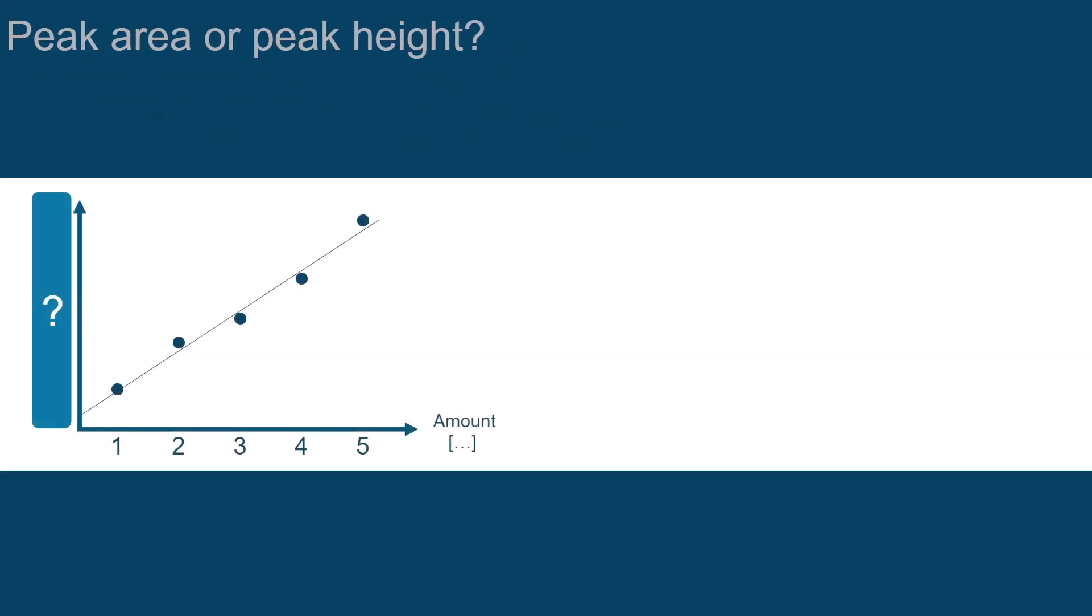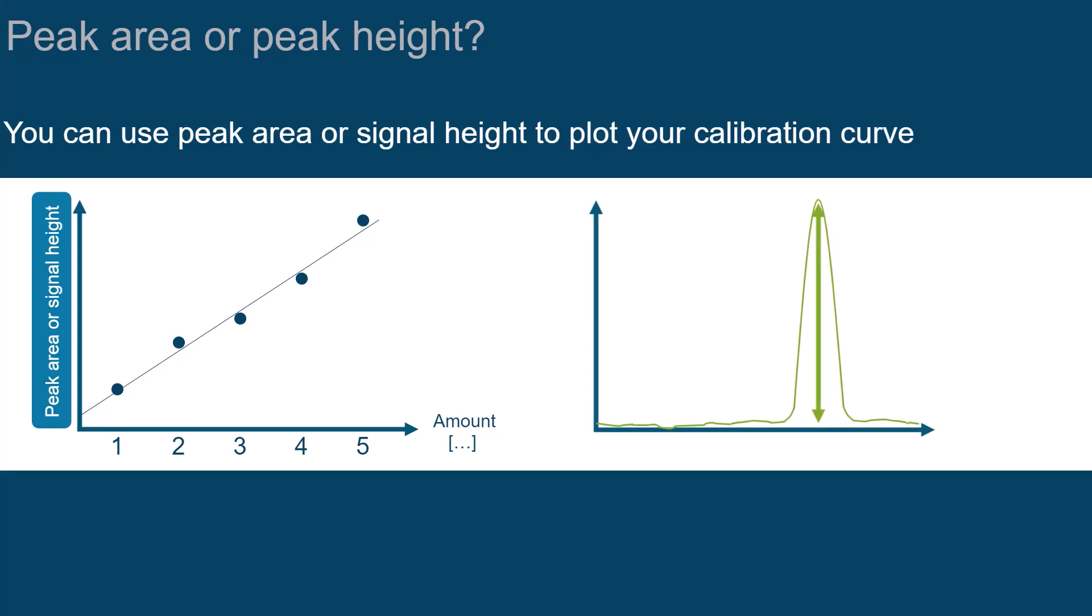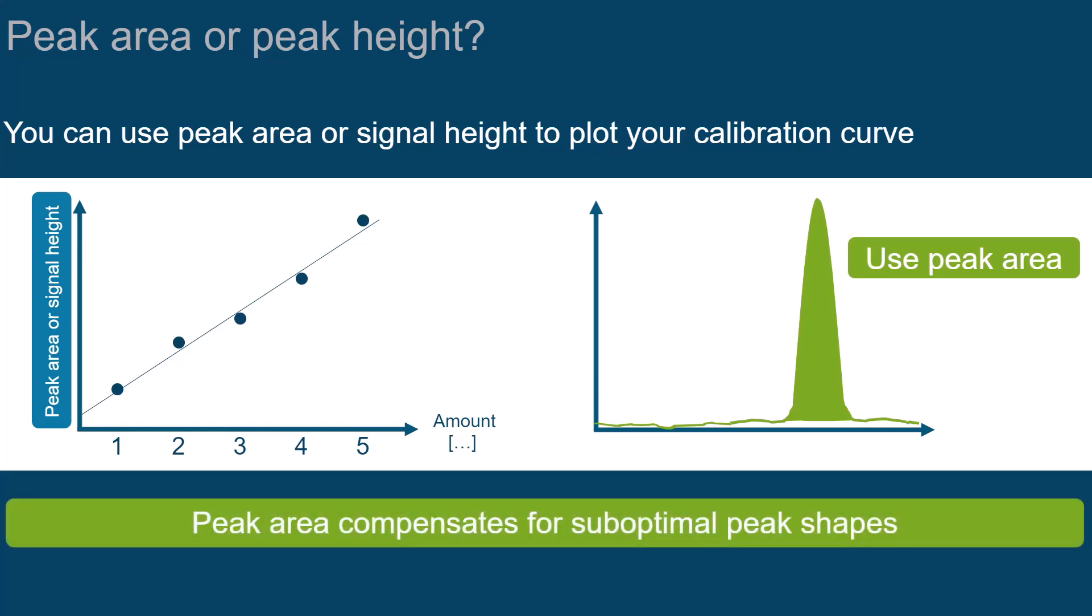And which value is used to plot your calibration curve? You can either use the peak area or the peak height. The peak height is determined from the noise level at the base of the peak, up to its apex. Though it is not technically wrong to use the peak height, the peak area generally provides a better quality of your calibration curve, because it compensates for suboptimal peak shapes.